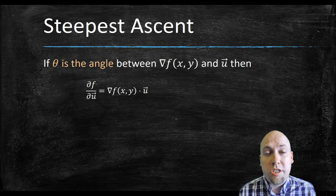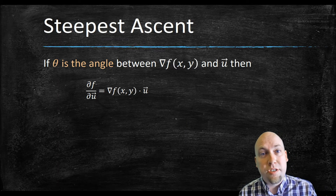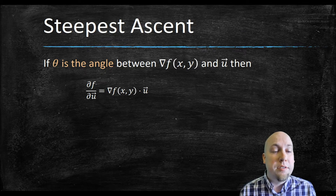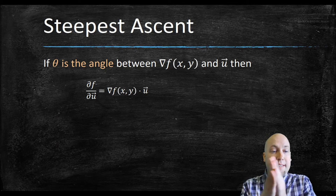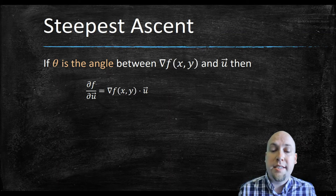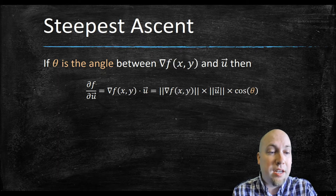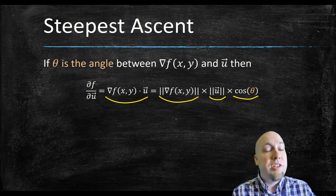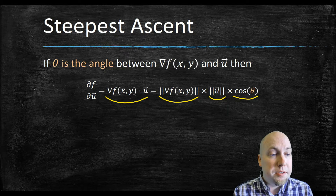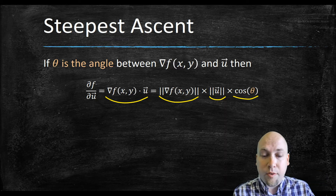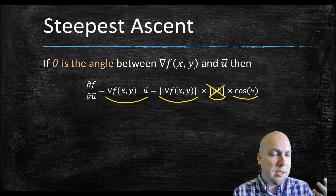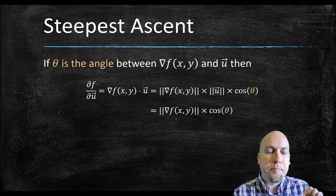To answer this question, we're just going to use properties of the dot product that we learned about a couple lectures ago. The dot product can tell us about the angle between two vectors. If theta is the angle between the gradient and the direction vector u that we're interested in, then this dot product equals the length of the gradient times the length of u times the cosine of the angle between those two vectors. Since u is a unit vector, it has length one, so that simplifies away.